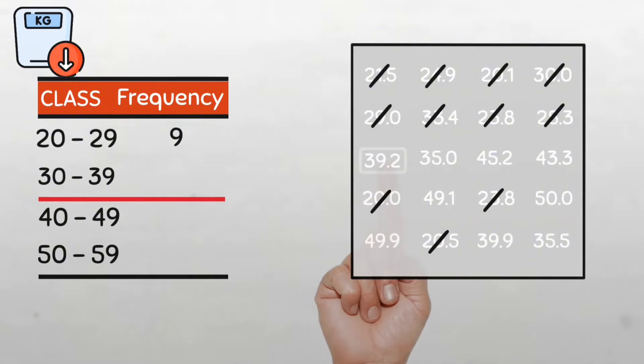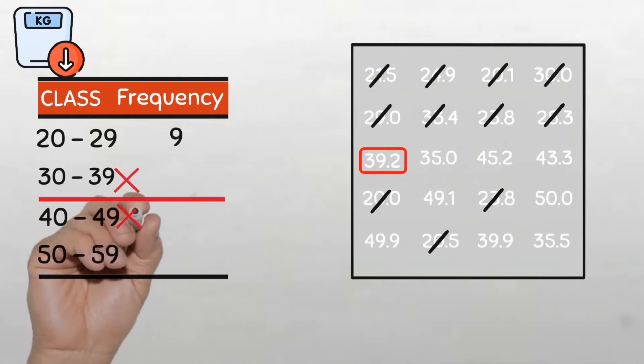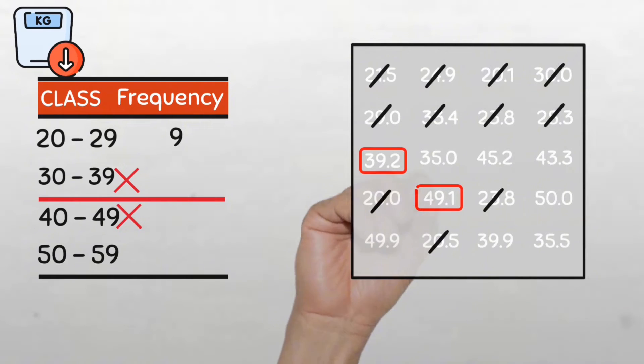Wait, what? Oh no. Where do we put this weight of 39.2? It can't go into this class, and it can't go into the next class. And let's even scan through the rest of the data to see if there's even more trouble. Here we are going to have the same issue with 49.1 and 49.9. Look, there's more. See 39.9 kg.